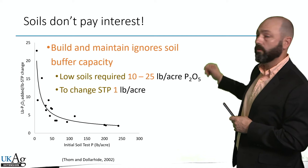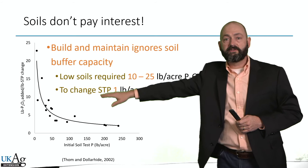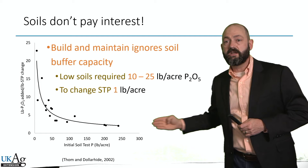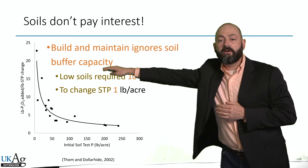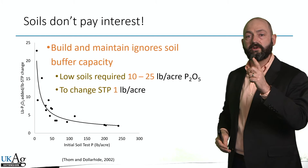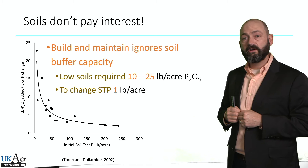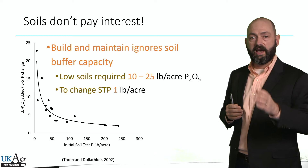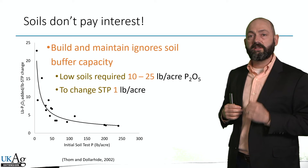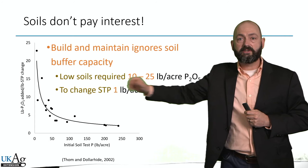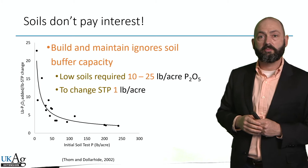Low-testing soils in the very low range require 10 to 25 pounds of P2O5 per acre to change soil test one unit. When you get over to higher initial soil test levels, you needed almost one-to-one — adding a pound of fertilizer changed soil test one unit. So on very low soil test soils at that far end of the range, if you add a really high rate you would need 600 pounds of P2O5 per acre to move soil test 10 units in one year.